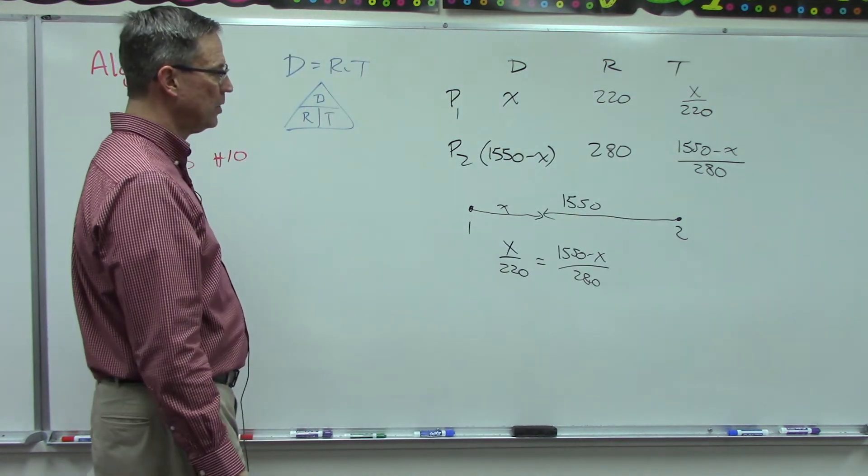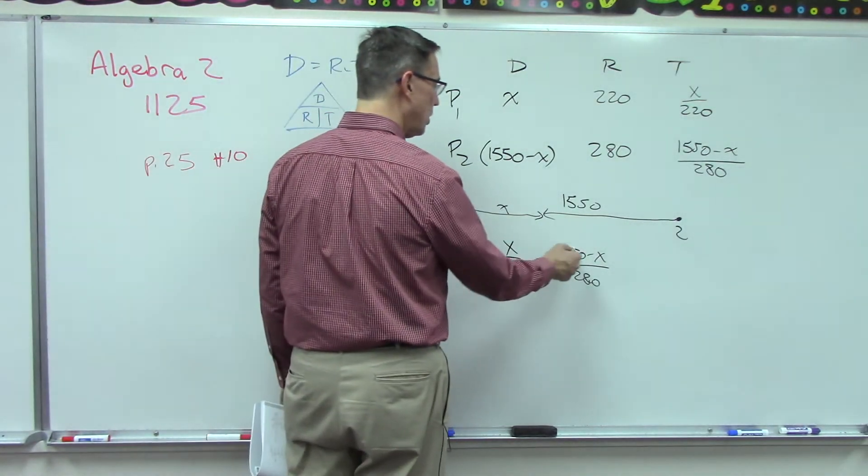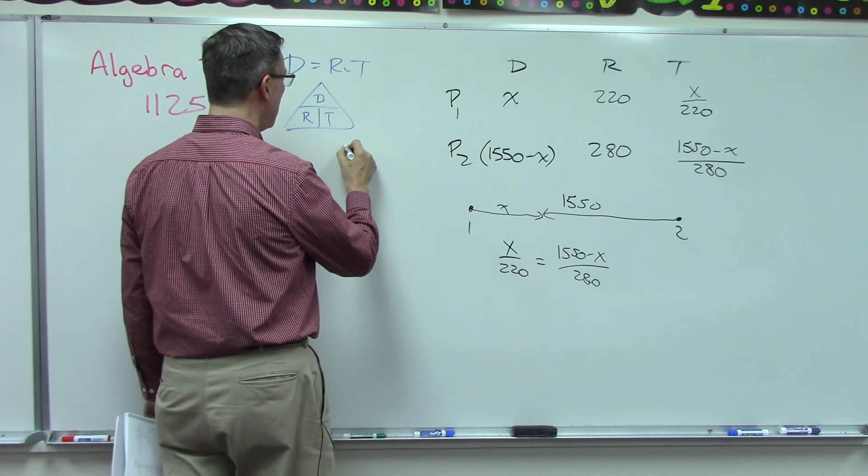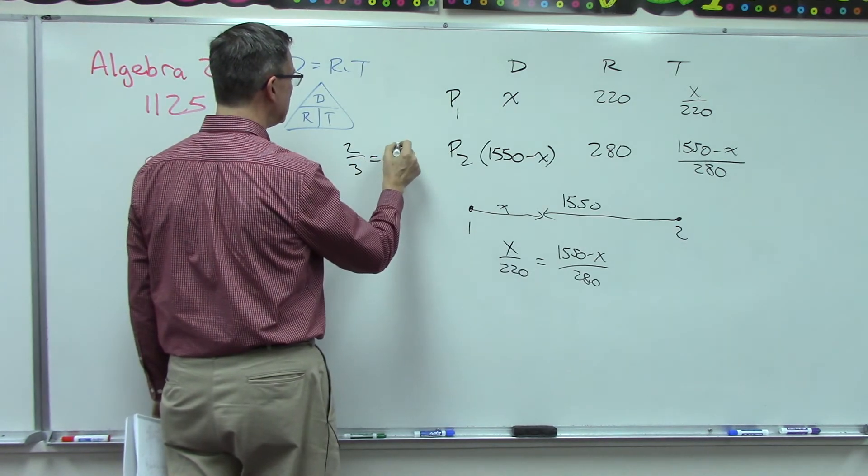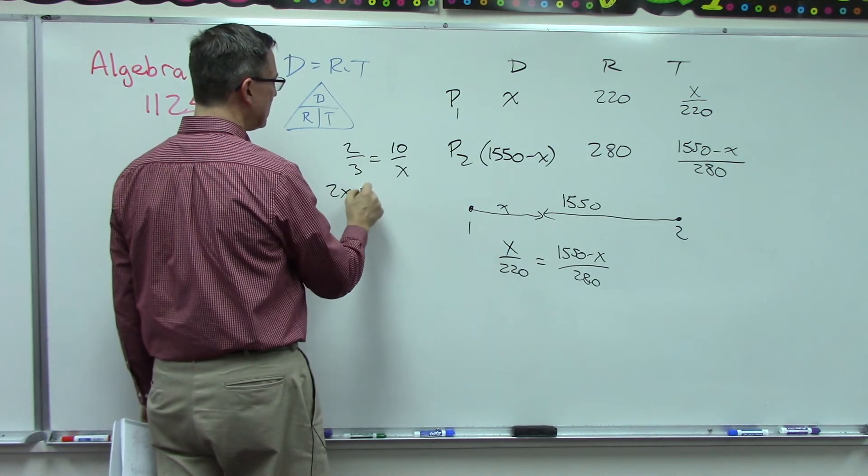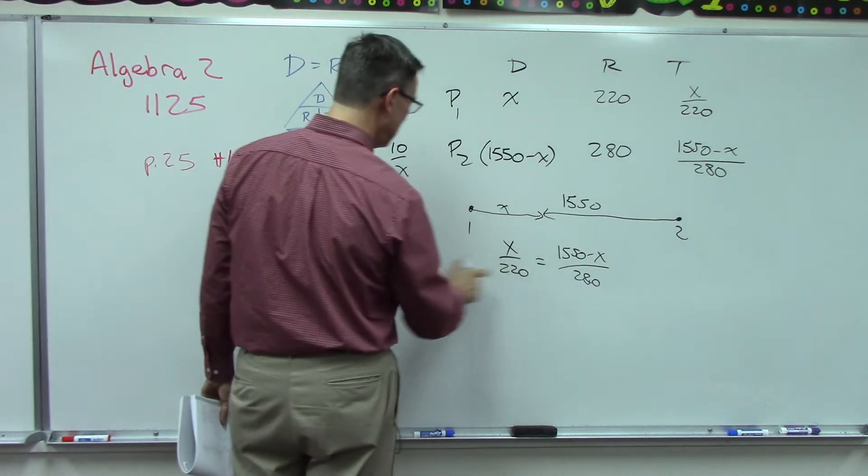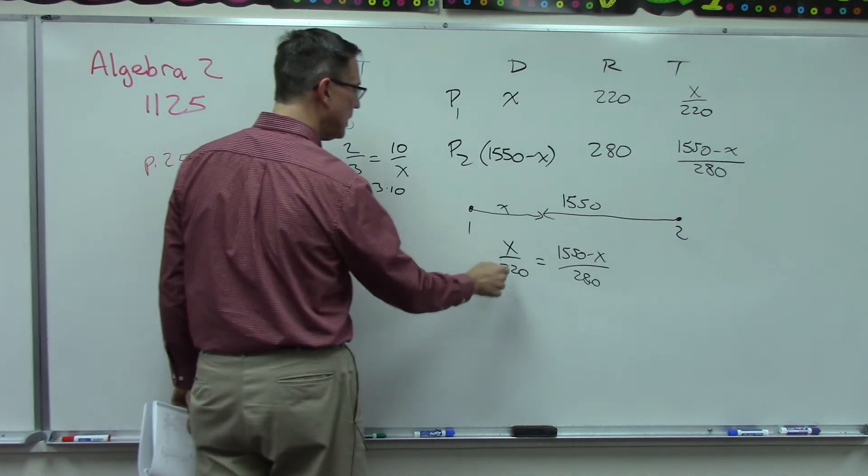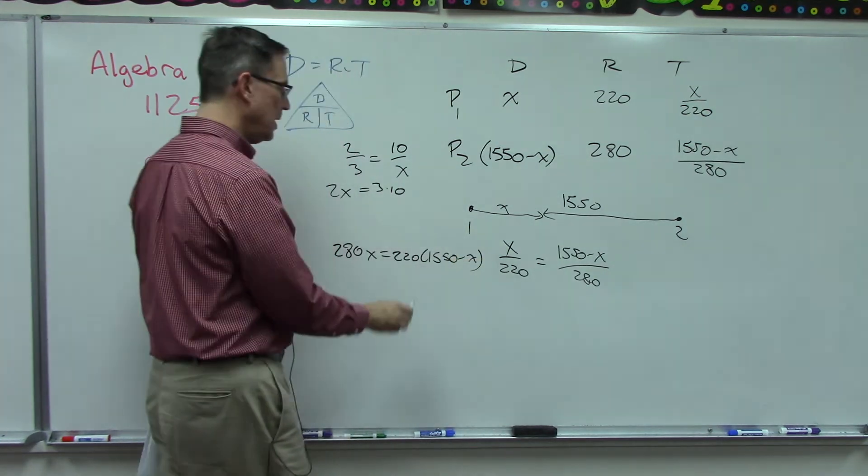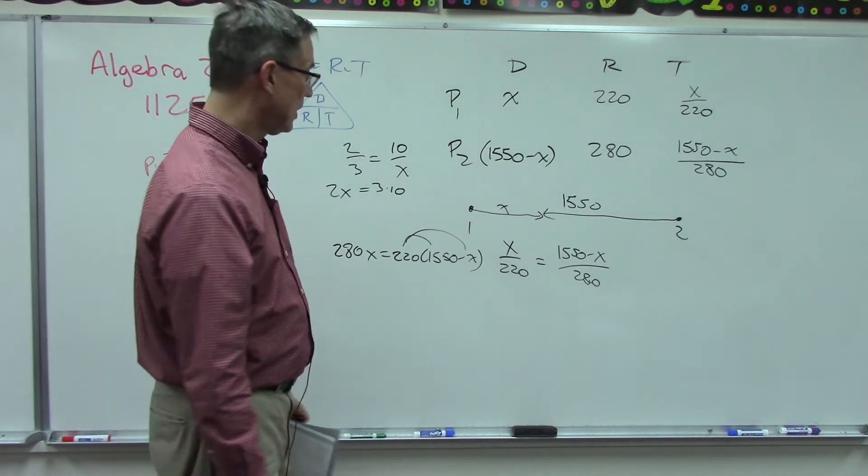I'm going to show you a quick shortcut here. If you know how to do ratios, did you know that if two fractions are equal, the cross products are equal? Like if I knew 2 over 3 equals let's say 10 over x, I could cross multiply and say 2 times x has to equal 3 times 10, and then divide and solve for x. Look, we could do something like that here. I could take 280 times x and set that equal to 220 times the quantity 1550 minus x, and now distribute this, solve for x, not having to deal with a common denominator and all of that jazz. So that method works as well.